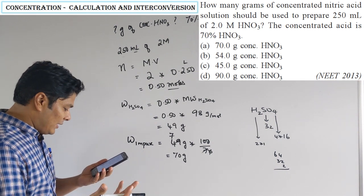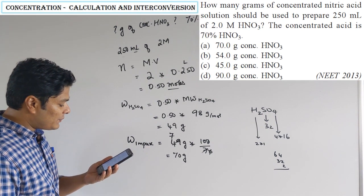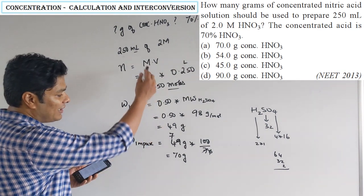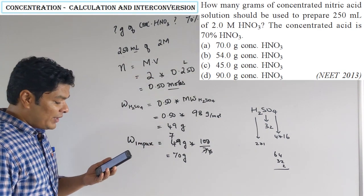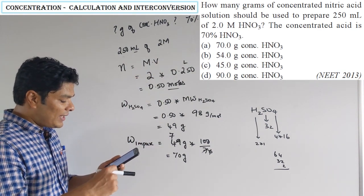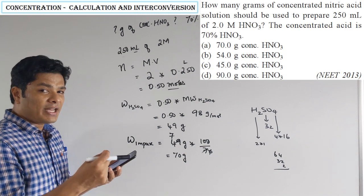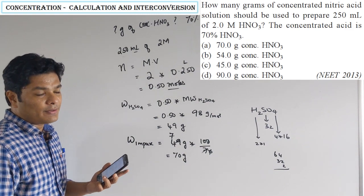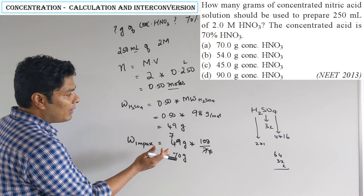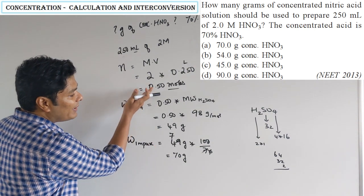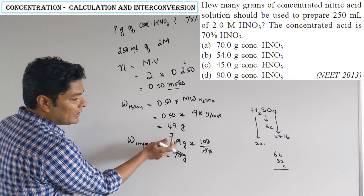The answer options given are: A — 70 grams, B — 54 grams, C — 45 grams, D — 90 grams. The values 54, 45, and 90 come from common mistakes people make. This is straightforward math — do not cancel numbers until the end and they will cancel.